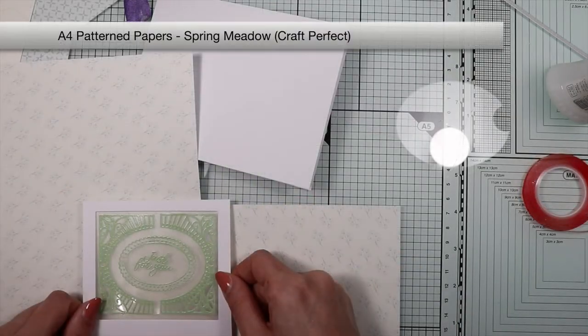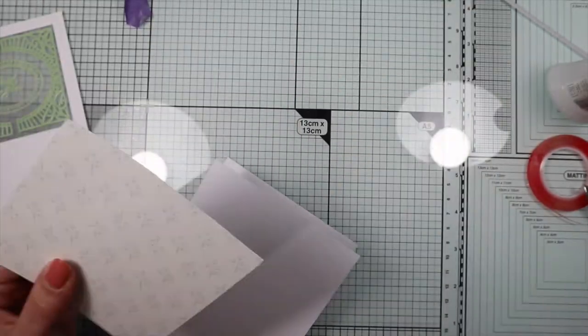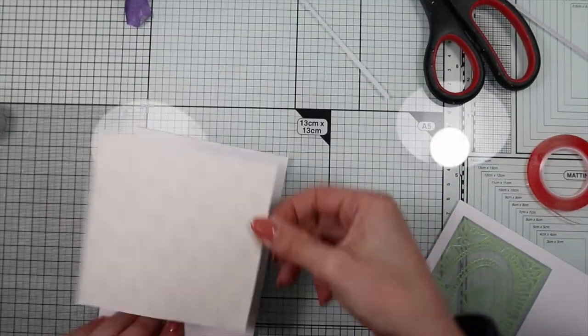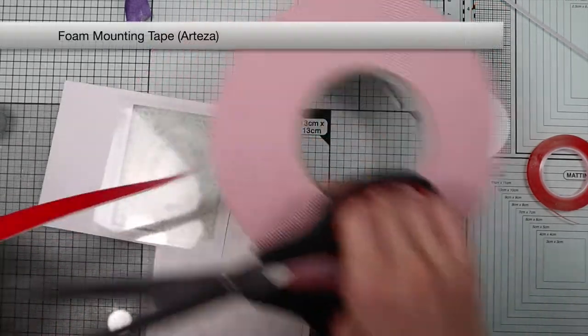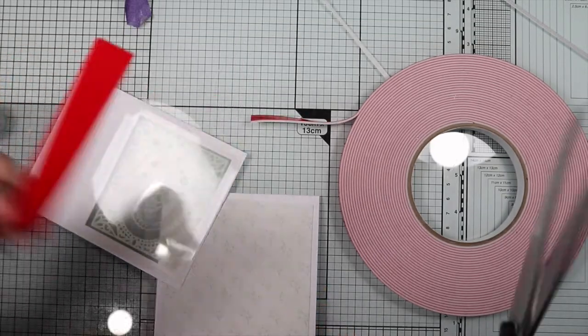As a background for the shaker card I'm going to use one of the pattern papers included in the kit. On the back of the main panel I apply some foam tape to create the thickness for the shaker card.